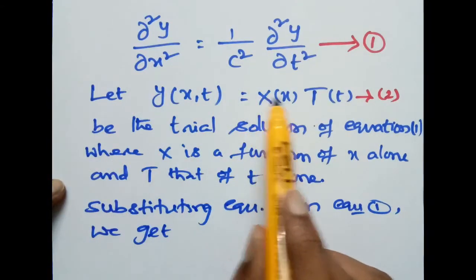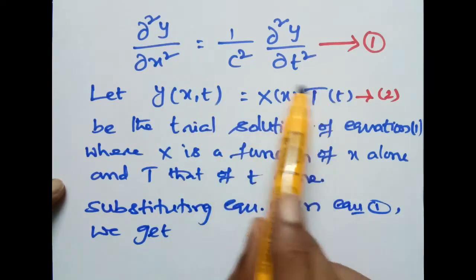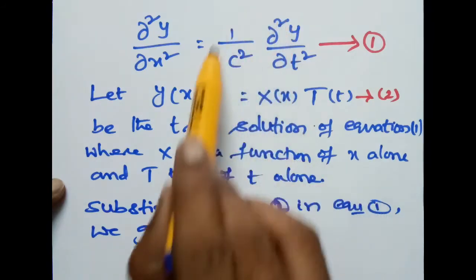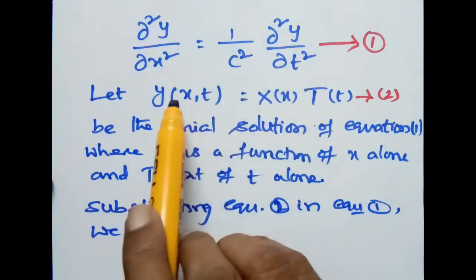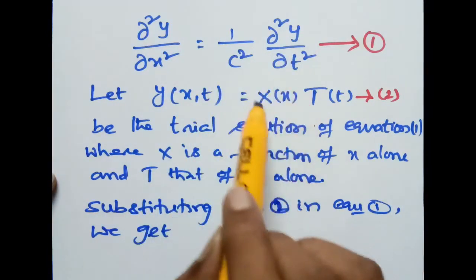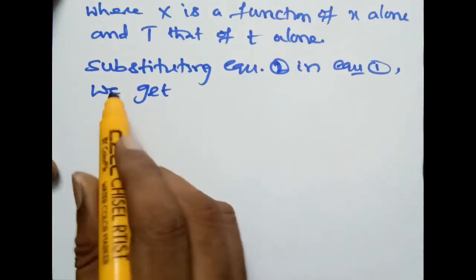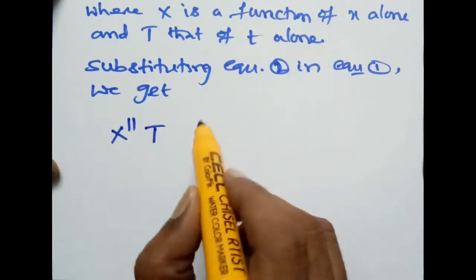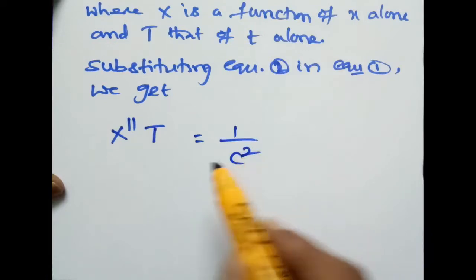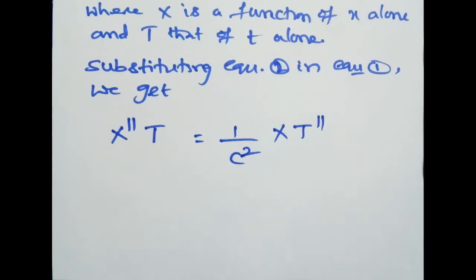Here d²y/dx² means partially differentiating y with respect to x two times. We get X'' · T, since T is a constant while partially differentiating with respect to x. And here (1/c²)(d²y/dt²) — partially differentiating y with respect to t twice, keeping x as constant, we get X · T''.